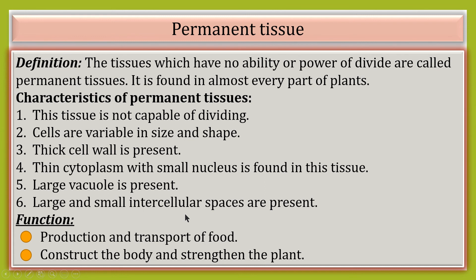The functions of permanent tissue are: production and transport of food, and to construct the body and strengthen the plant.